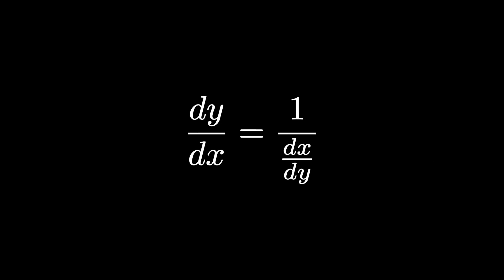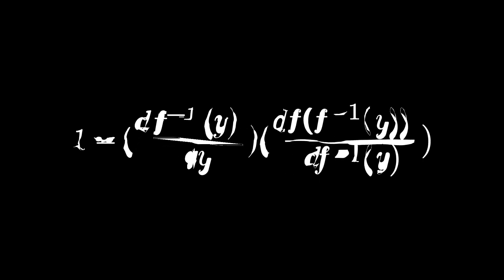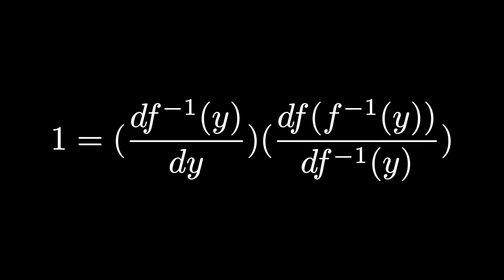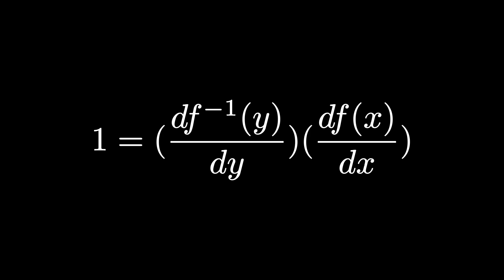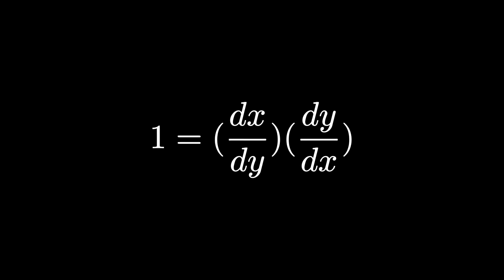If we wanted to prove this algebraically, we can use the chain rule for y equals f inverse f of y to get 1 equals d inverse f of y over dy times df inverse f of y, which results in 1 equals d inverse f of y over dy times df of x dx, or finally 1 equals dx over dy times dy over dx, meaning dx dy and dy dx are reciprocals.